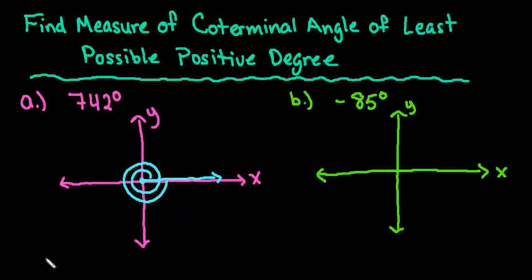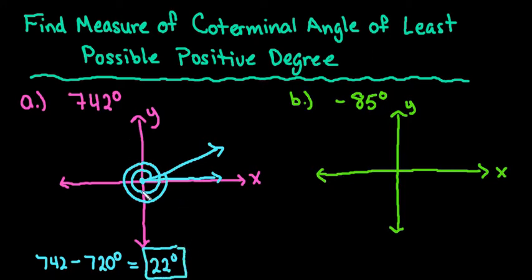So I'm going to go 742 minus 720 degrees and that's going to put us at 22 degrees. So we're going to go just a little bit further and that would be our stopping point of 22 degrees. So 22 degrees is the least possible positive coterminal angle of 742 degrees.